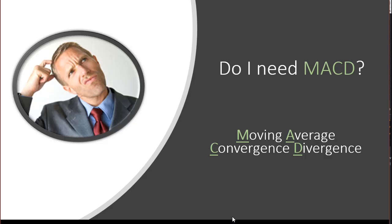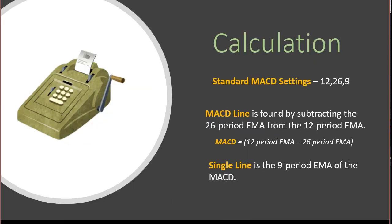MACD stands for Moving Average Convergence Divergence — a big fancy word that means we're working with moving averages. Now, what is the one thing that's true about a moving average? A moving average is a lagging indicator. The way a moving average works is the price action has to have already passed, and then it's plotted on the chart. So all moving averages are lagging — I want to make that very clear right at the beginning.